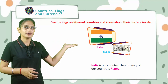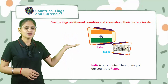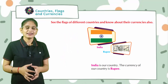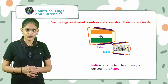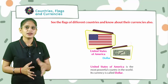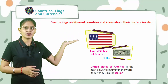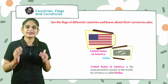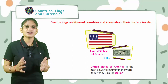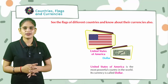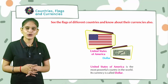Look at the first picture — we have India, and its currency is rupees. India is our country; the currency of our country is rupee. Look here: United States of America — dollar. The United States of America is the most powerful country in the world, and its currency is called dollar.